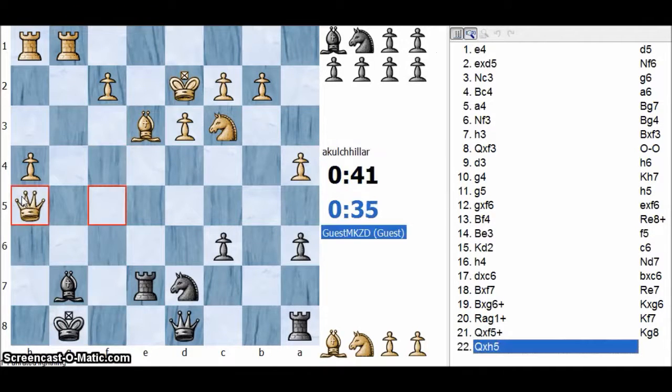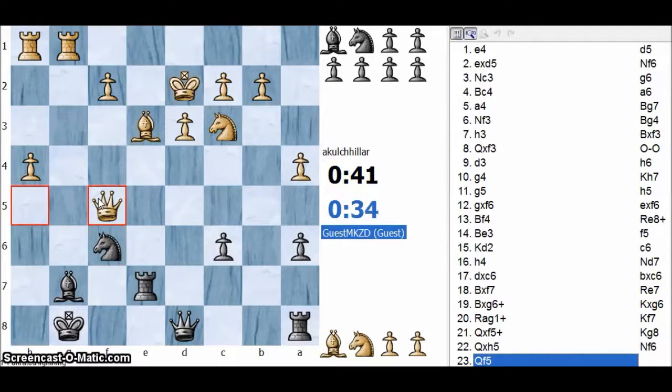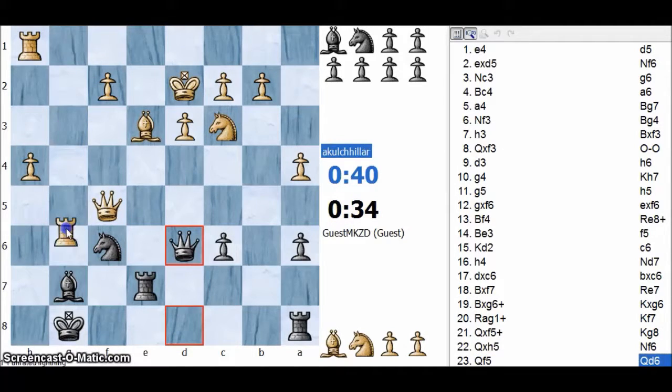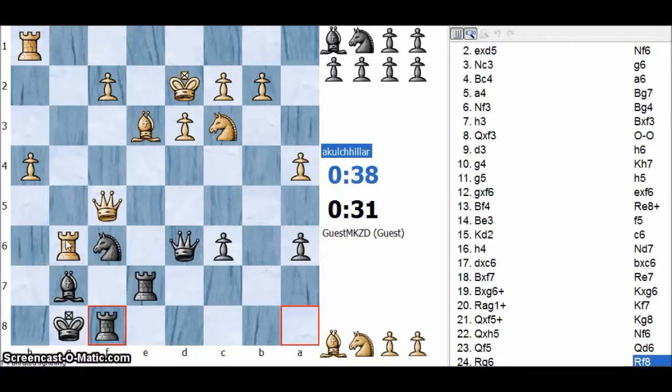e5. f takes e5, d takes e5, knight takes e5. I am winning a pawn here but somehow I would not like to give away my center.